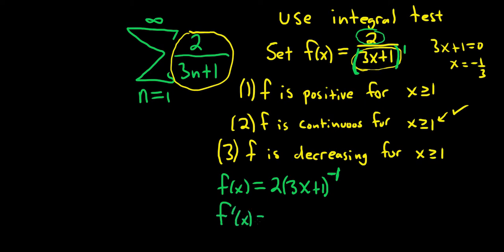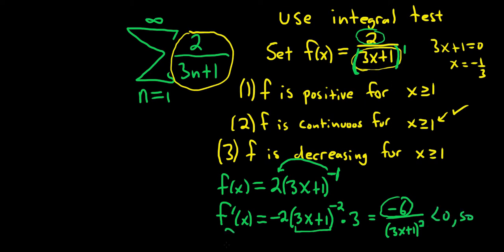So f'(x), you take the negative one and bring it down. That's -2(3x+1), subtract one. You get -2 times the derivative of the inside. So the derivative of the inside is just 3. So this is -6 over and then bring that thing downstairs again. So you have a negative number over something squared so it's always positive. So it's going to be negative. So f is decreasing for x greater than or equal to one.